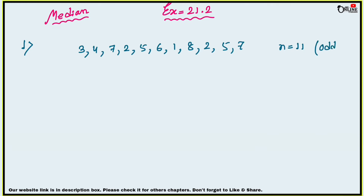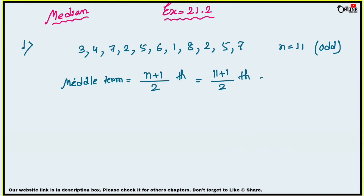n means number of terms, so total number of terms is 11, which is an odd number. For odd n, the formula for the middle term is (n+1)/2. For even n, it is the average of the (n/2)th and (n/2 + 1)th observations. Since n is odd, the median position is (11+1)/2 = 12/2 = 6th observation.